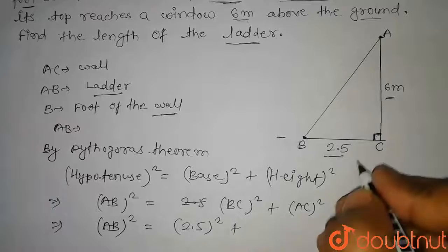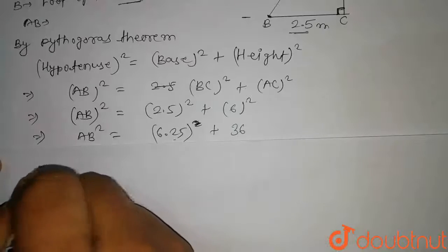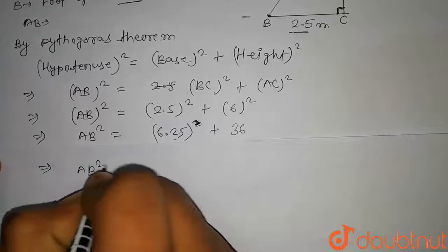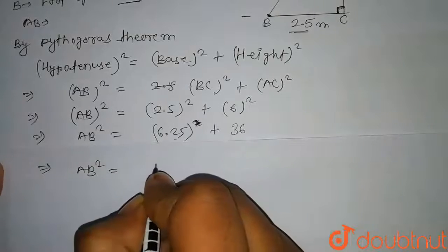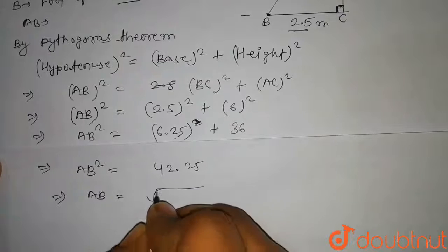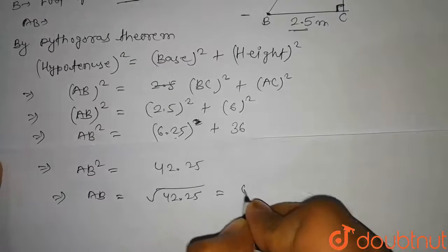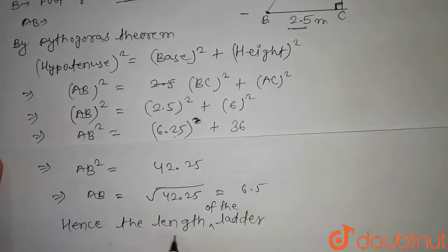On further solving this, we get AB squared equals 6.25 plus 36, which is 42.25. So AB equals the square root of 42.25, that is 6.5. Hence, the length of the ladder is 6.5 meters.